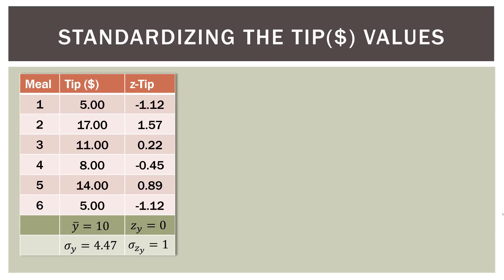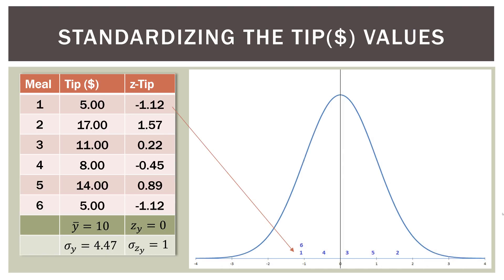So now the same thing for the tips. In the previous slide, we did the bills. Now we're gonna do the tips, same thing. Here's our distribution. We can see that meal one is negative 1.12 deviations below the mean. Meal two, the tip is 1.57 deviations above the mean, and so on and so forth. You can see where each tip falls along that distribution as well.